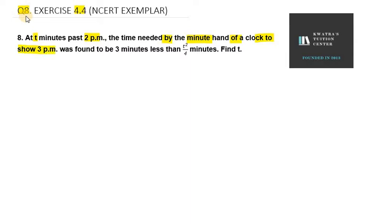There is a gap of 60 minutes. Was found to be 3 minutes less than t square over 4 minutes. So we know it is behind t square over 4. We need to find the value of t.